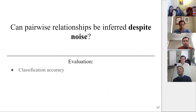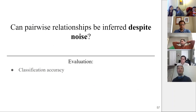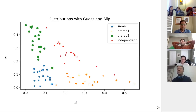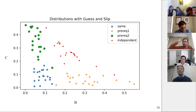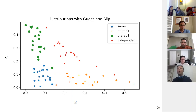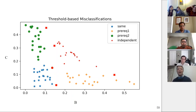In the real world where students might guess, make mistakes, or there might be grading errors, can we still determine the relationship? If we add about 20% likelihood of guessing — representative of guessing one out of five answers on a multiple choice question — these categories are still somewhat separable by looking at the B and C statistics. We can build a classifier that distinguishes based on whether B and/or C could have been generated by random noise or require additional likelihood. Using that classifier gives us pretty good accuracy, with only a little error on the boundaries between categories.